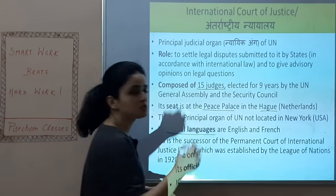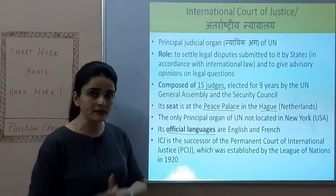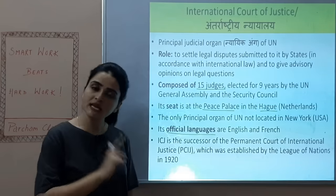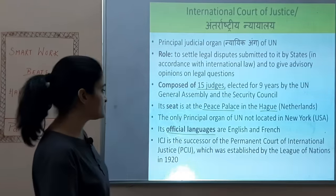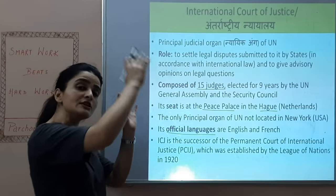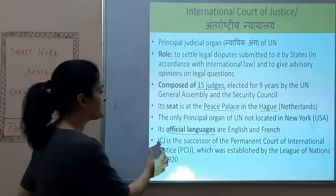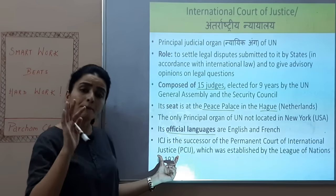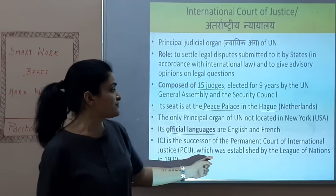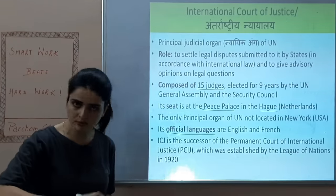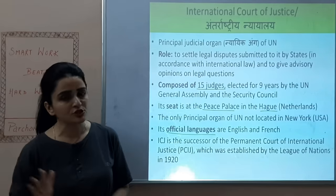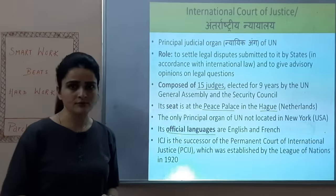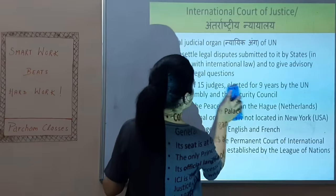ICJ's official languages are English and French. ICJ also has a predecessor — just as the UN succeeded the League of Nations, ICJ succeeded the Permanent Court of International Justice (PCIJ), which was established by the League of Nations in 1920. The ICJ itself was established in 1945 when the United Nations was formed.